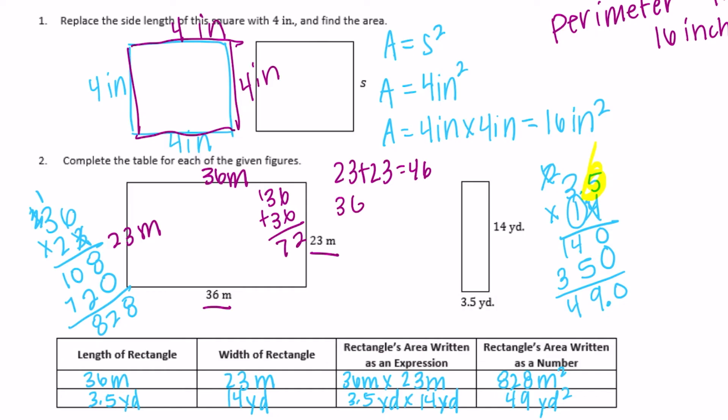So we just need to add those together. Seven plus four is eleven, so it would be one hundred eighteen meters is the perimeter for that one.